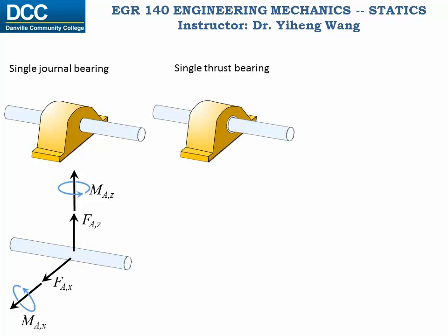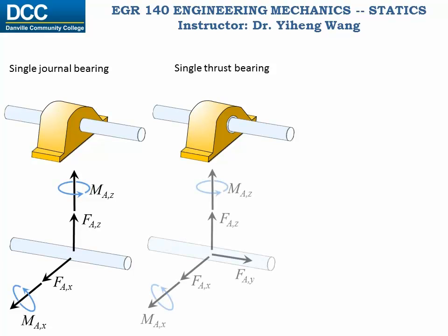The next one is a single thrust bearing. As you can see, this looks just like the previous one except for the thrusts, which now prevents the translational motion along the axial direction. Therefore, this bearing also exerts a force reaction along the y direction.